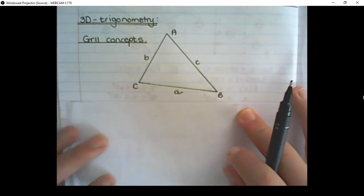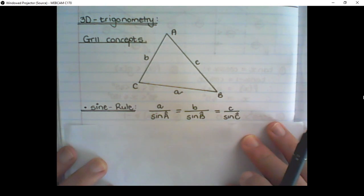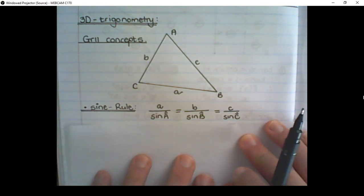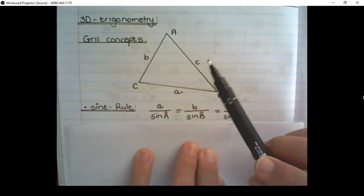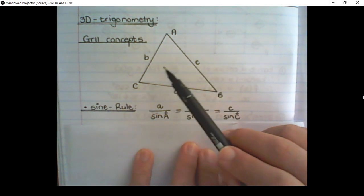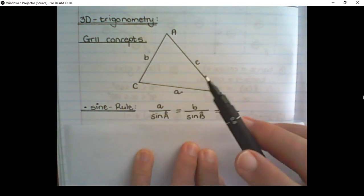Other concepts from grade 11, we have the sine rule. The sine rule is simply a ratio where we compare the side to the angle, and all of these ratios are equal to each other.